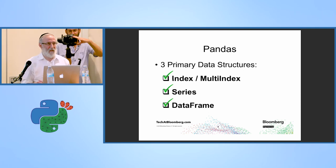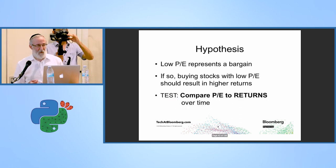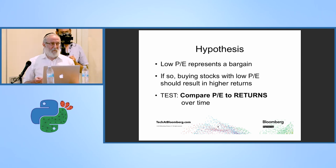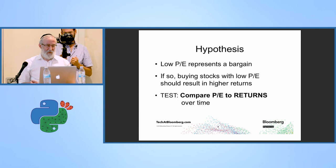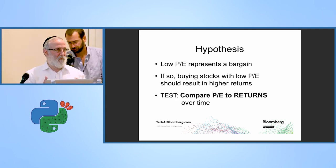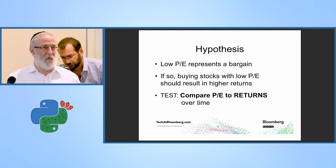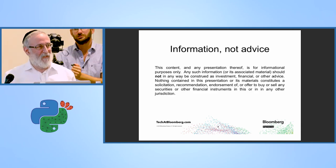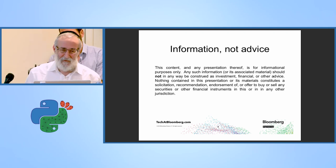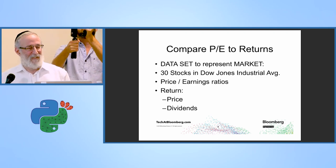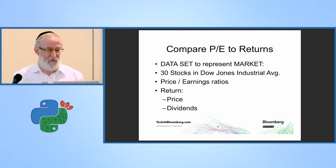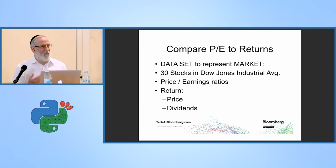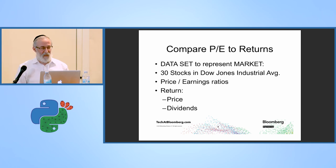Now we know the basics of Pandas, so we can test our hypothesis: that low PE represents a bargain, and buying stocks with a low PE should result in higher returns. We need to compare PE to returns and see a negative correlation — when PE goes down, returns go up. For our dataset I chose the 30 stocks in the Dow Jones Industrial Average. I wanted something small I could scroll through and understand, since this was my first time using Pandas.